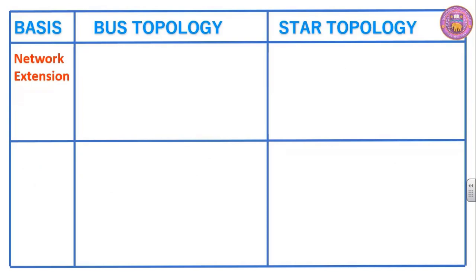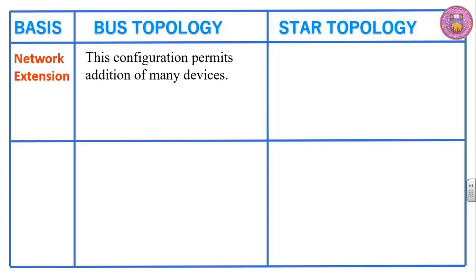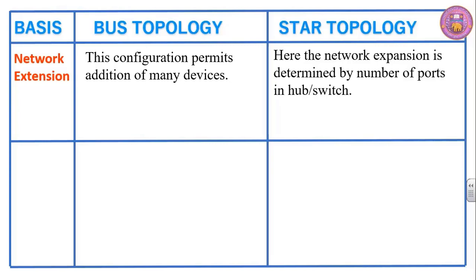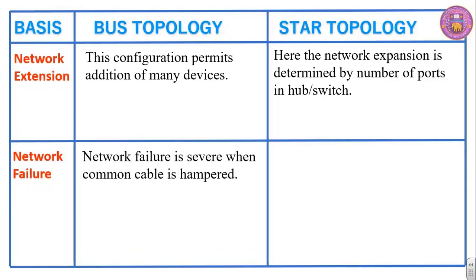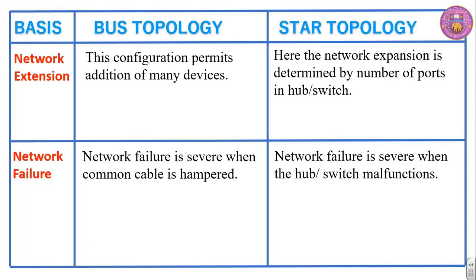Network extension. The bus topology configuration permits addition of many devices. In star topology, network expansion is determined by the number of ports in the hub or switch. Network failure is severe in bus topology when the common cable is hampered, and in star topology when the hub or switch malfunctions. These are the key distinctions between bus topology and star topology.